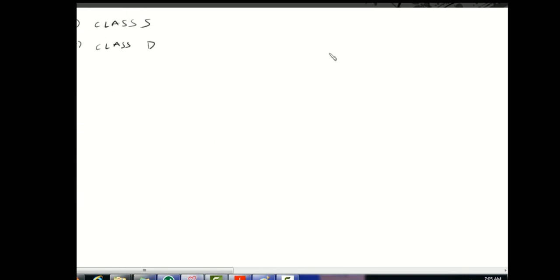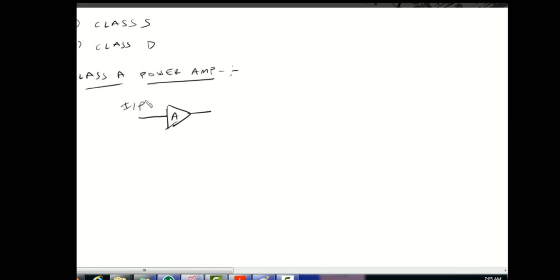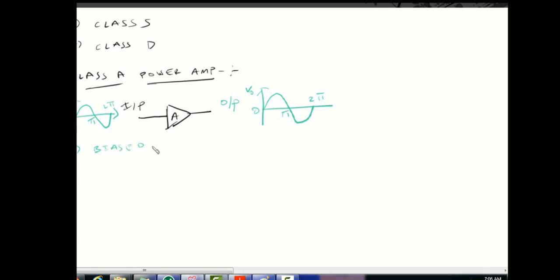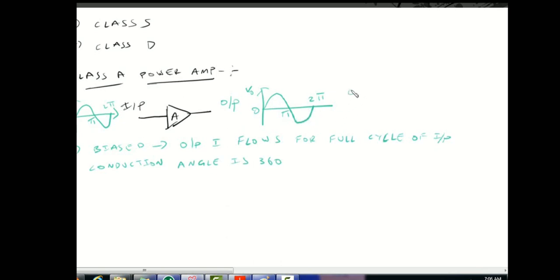In the Class A power amplifier, here is the biasing arrangement. The output current flows for 360 degrees — a full cycle. The output is the same as the input; it is a complete replica of the input signal. Full cycle conduction is done in the transistor.